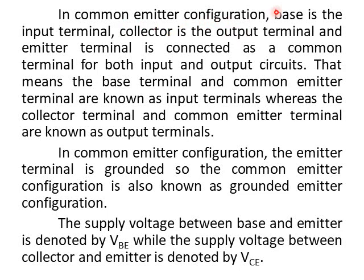In Common Emitter Configuration, the Base is the Input Terminal and the Collector is the Output Terminal. The Emitter Terminal is connected as a Common Terminal for both input and output circuits. That means the Base Terminal and Common Emitter Terminal are known as Input Terminals, whereas the Collector Terminal and Common Emitter Terminal are known as Output Terminals.